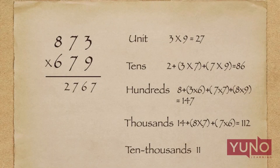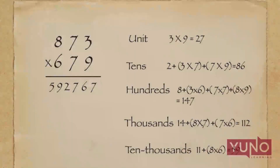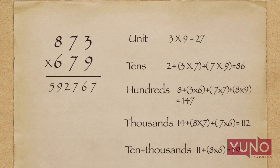In the last step, I will perform the multiplication of the hundreds-place digits — 8 × 6 — and add it to the carry of 11. The total will be 59. I will write 59 in the answer, so our final answer will be 592,767.